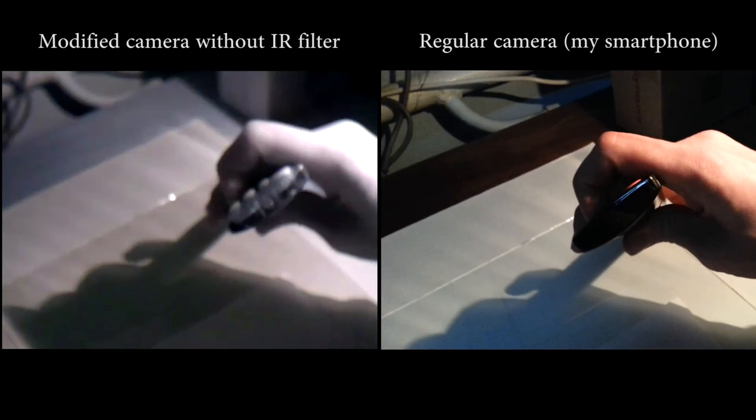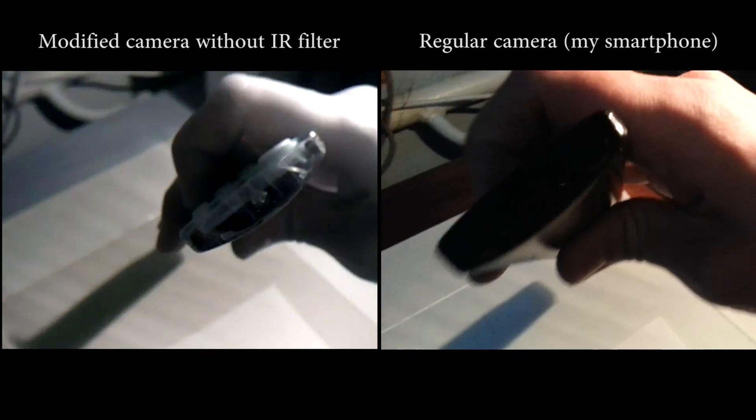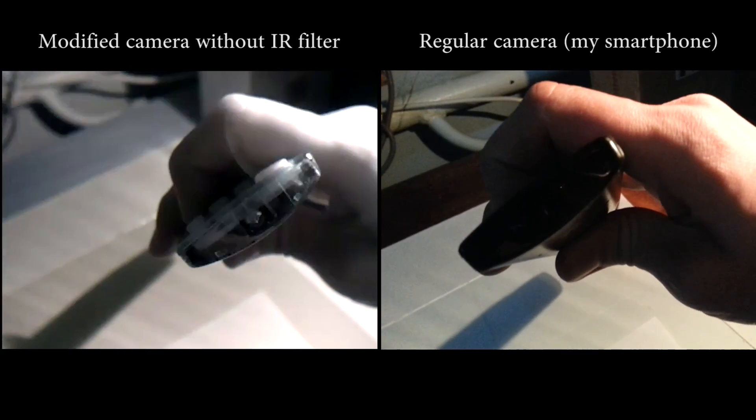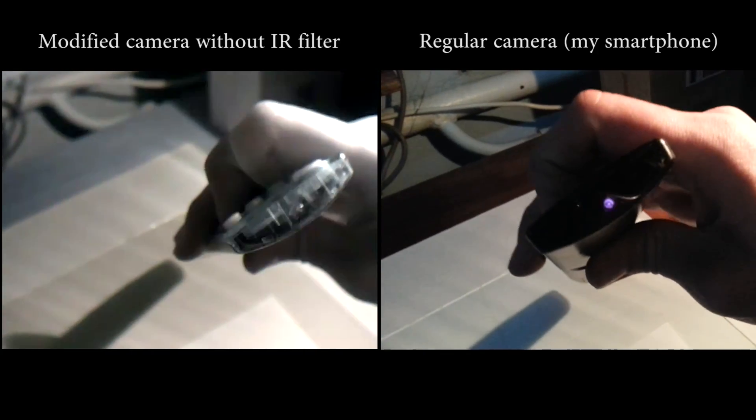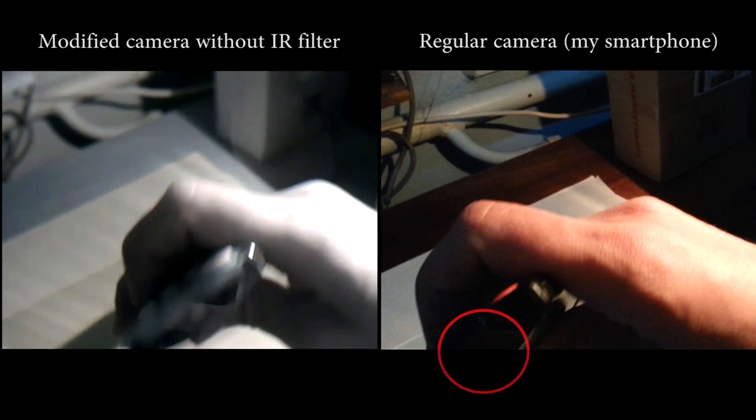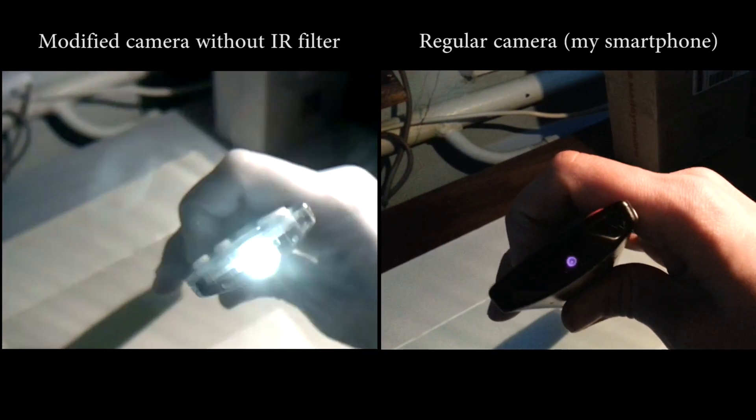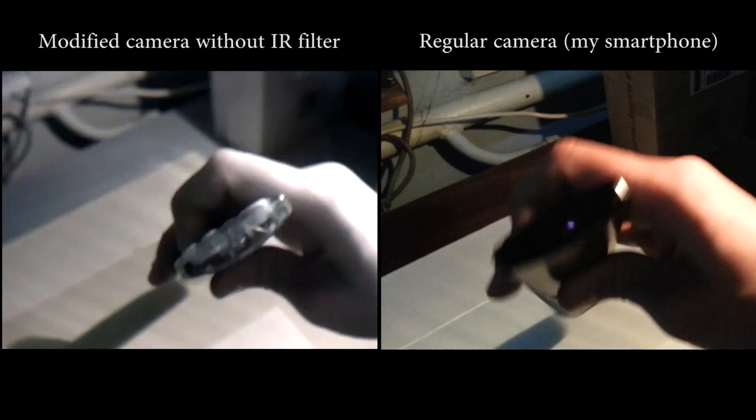And here is how transmission of the remote control looks like. With my eyes, I don't see any light at all from the remote control. But the camera of the smartphone already can pick up a little bit of light. But on the camera without the filter, it looks a lot brighter.